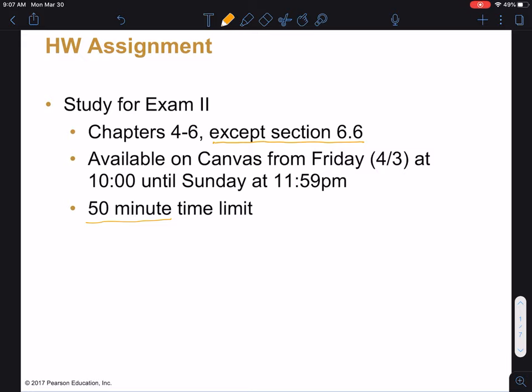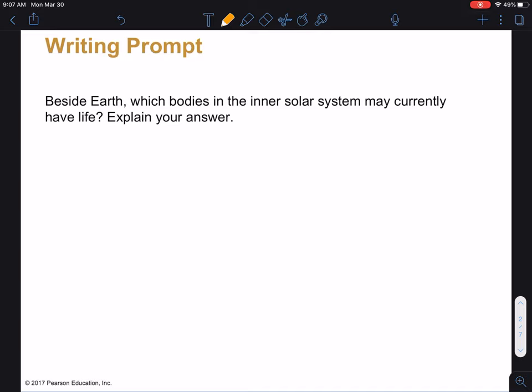I guess we will move on with today's material. So here's a writing prompt for you. I want you to go ahead and think about this: besides Earth, which bodies in the solar system may currently have life? And I want you to explain your answer. So go ahead and push pause and take three minutes to write down your answer.